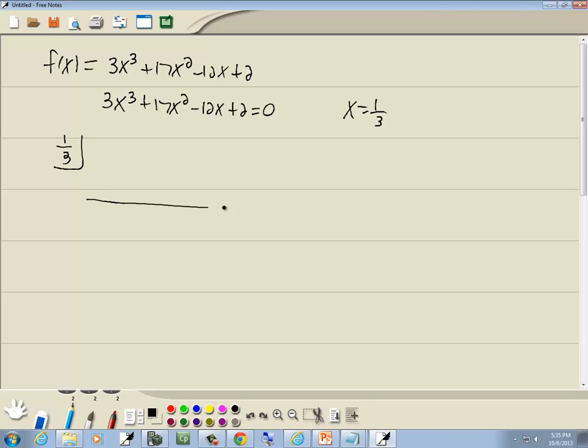So let's plug that into synthetic division. Now our largest power is x to the third, so real small across the top I'll write x to the third, x squared, x, no x. You start with your largest power and you have one for each power going down whether you have it in your problem or not. The number in front of our x to the third is 3, number in front of our x squared is 17, number in front of our x is negative 12, and our constant term is 2.